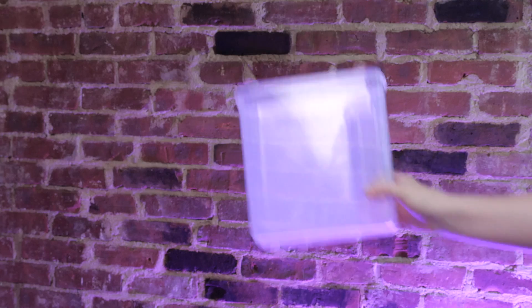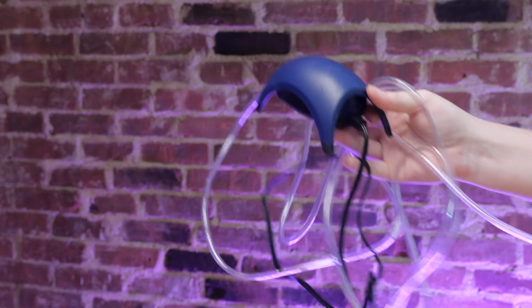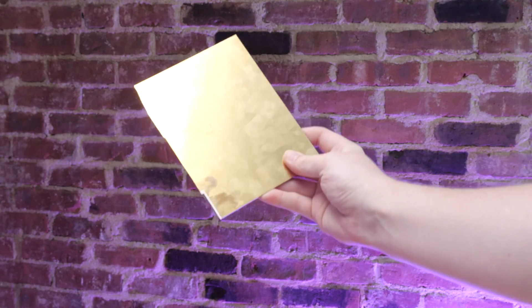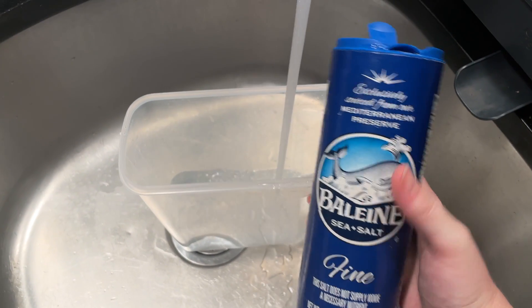You'll also need a tall plastic bin, this one is marketed for storing breakfast cereal, an aquarium pump driving an aerator stone, the metal to etch, and a commensurately sized piece of scrap steel, and some warm salt water.